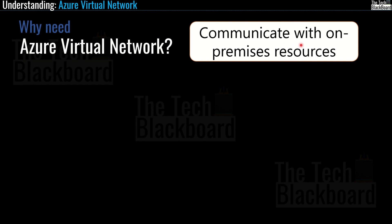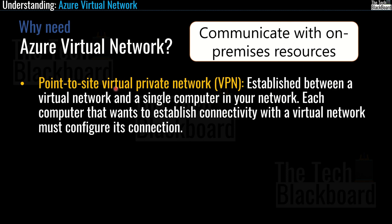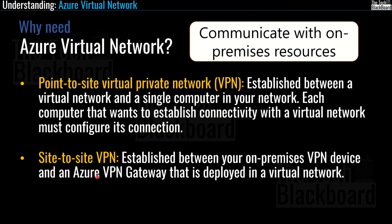Azure virtual network also helps you communicate with on-premises resources. The first option is Point-to-Site VPN, established between a virtual network and a single computer in your network. Each computer that wants to connect to the virtual network must configure its own connection. The second popular way is Site-to-Site VPN, established between your on-premises VPN device and an Azure VPN gateway deployed in a virtual network.